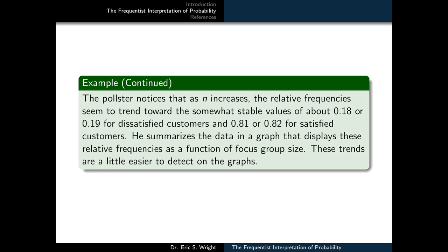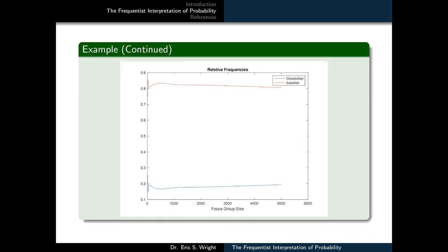If we actually look at the graph, we can see that the blue trace represents the relative frequency of the dissatisfied customers, and it does tend to level off somewhere around 0.18 or 0.19 as anticipated.